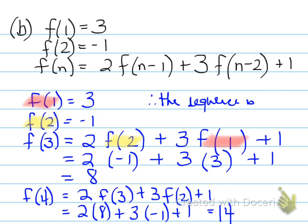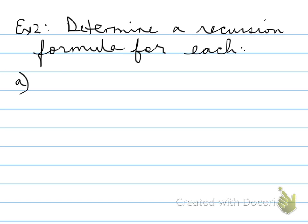So the first sequence is 3, negative 1, 8, and 14. That is the first four terms of the sequence. Example number 2, you're asked to determine a recursion formula for each of the following.